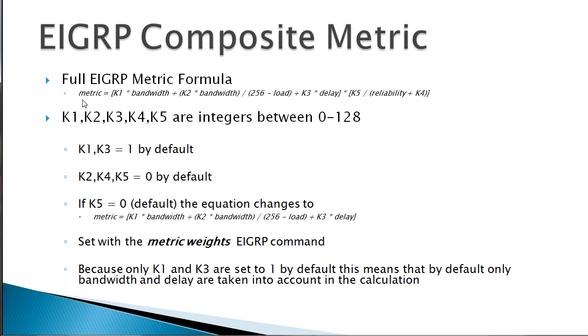But the nice thing is that by default, all this stuff breaks down very nicely to an easy to remember formula. Let's look at K values first. The K1 through K5 variables in this equation, what are those? Well, all they are is integers, really just numbers that can be anywhere between 0 and 128. We use those numbers to multiply times these other variables in the equation to come up with the overall composite metric.